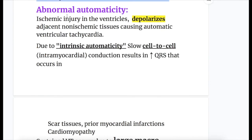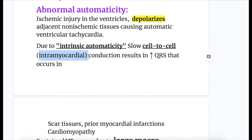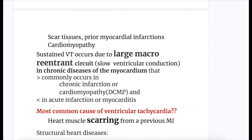Abnormal automaticity: ischemic injury in the ventricles depolarizes adjacent non-ischemic tissues, causing automatic ventricular tachycardia. Due to intrinsic automaticity, slow cell-to-cell and intramyocardial conduction results in prolongation of the QRS, which occurs in scar tissues, prior myocardial infarction, and cardiomyopathy.